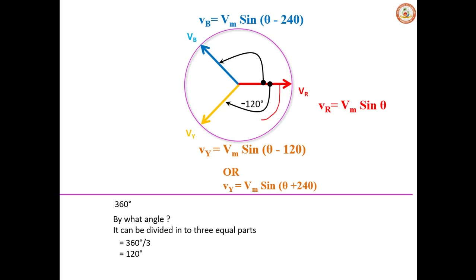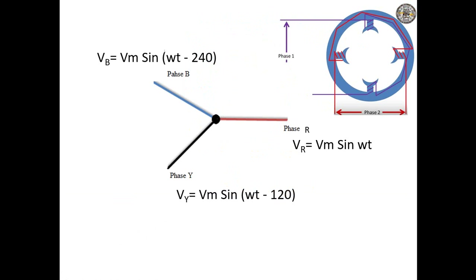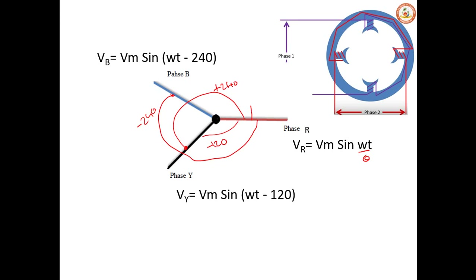This angle up to V_Y is minus 120° and up to V_B is minus 240°. We can also write V_B as plus 120° if seen in the anticlockwise direction. So this angle is plus 120° and from that point is minus 240°. Similarly, V_Y in anticlockwise direction is plus 240°, and V_B in anticlockwise is plus 120°.